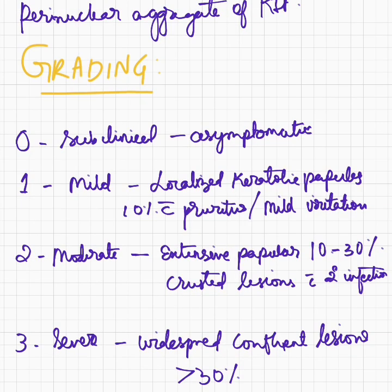Coming to grading, there are 4 grades starting from 0 to 3. Grade 0 is subclinical severity with asymptomatic lesions, sometimes presenting as acrokeratosis or nail changes. Grade 1 is mild severity with localized keratotic papules, 10% area involvement with pruritus and mild irritation. Grade 2 is moderate severity with extensive papular lesions involving 10 to 30% of body area and crusted lesions with secondary infection. Grade 3 is severe, with widespread confluent lesions involving more than 30% of the body surface area.